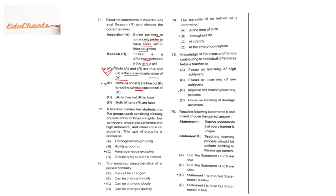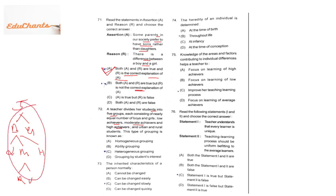Question 72: a teacher divides students into five groups of nearly equal numbers of boys and girls, further divided into low, moderate, and high achievers, and also into rural and urban. What type of grouping is this? Heterogeneous — people from different groups join the same group. Homogeneous means same type of people group together. The answer is C, heterogeneous grouping.